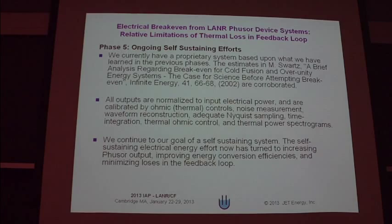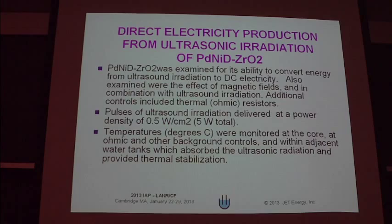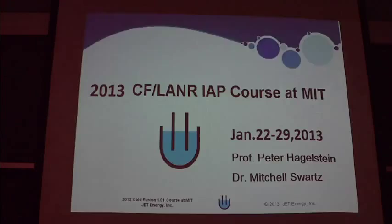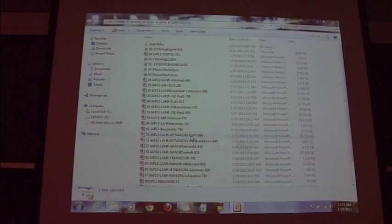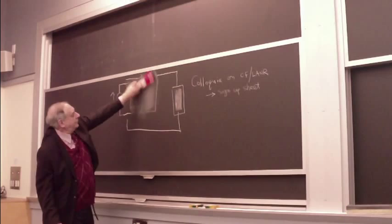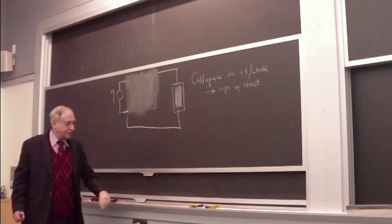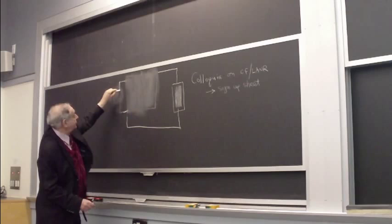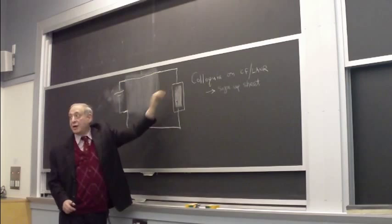We have also used the nanomaterials to try and make direct electricity. Let's switch to nanomaterials. We're going to get rid of all of the heavy water, make something new. And instead of having to be stuck with Norton-equivalent current sources, we're going to make it so we can use any voltage source. We're going to make a dry cold fusion device. These are the nanors.